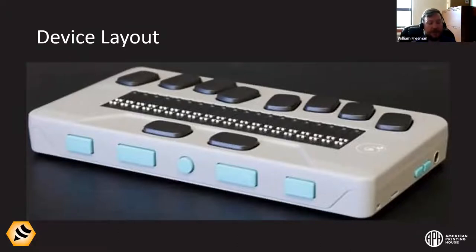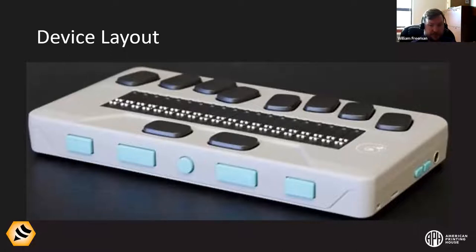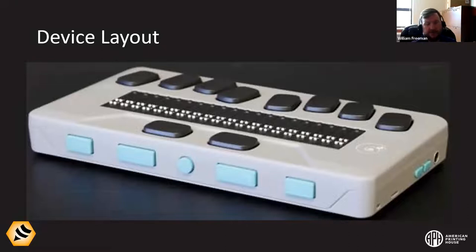Below the USB-C port is the power button. You can tap it once to put the device to sleep, or press and hold it to power off the device. Below that is the USB-A port, which is for thumb drives. If you have a thumb drive and want to transfer something to or from the device, that's where you plug it in. The device has 16 gigs of onboard storage, and you can use a thumb drive up to 64 gigs.